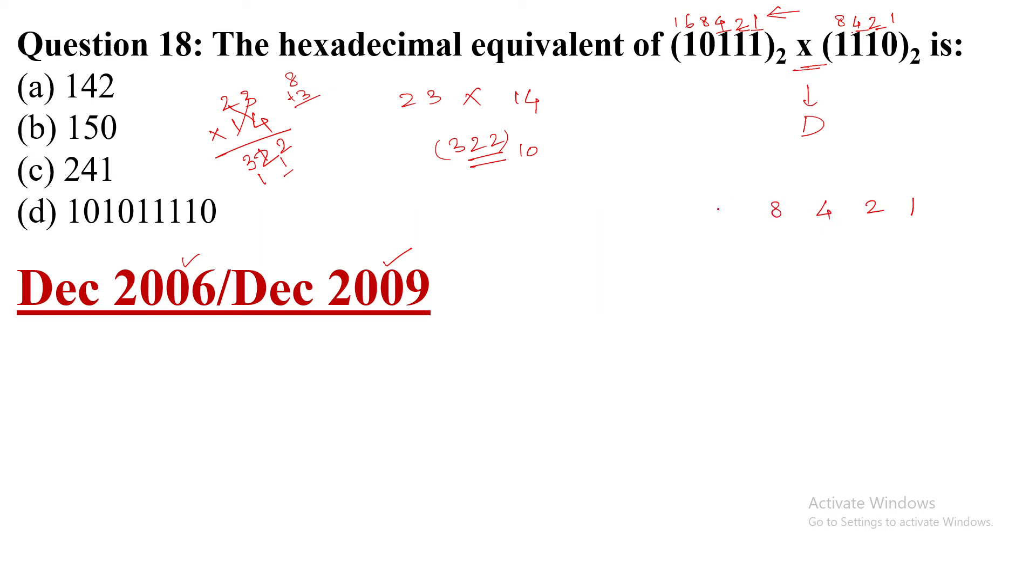2 to the power 4 is 16, 2 to the power 5 is 32, 2 to the power 6 is 64, 2 to the power 7 is 128, and 2 to the power 8 is 256. Now 322, if I will write 512, which is 2 to the power 9, it is a bigger number than 322.